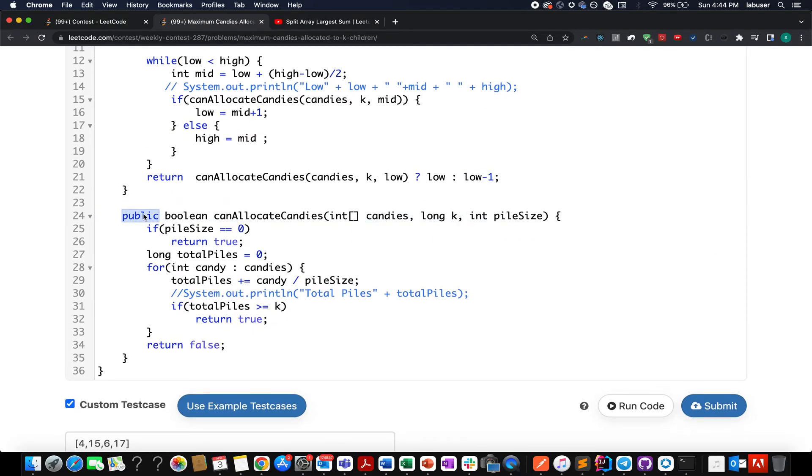Now the problem reduces to writing this helper method appropriately, which returns a boolean variable canAllocateCandies with three parameters: candies, k, and pile size. If my pile size is zero - just one corner case - return false. Otherwise, I created a variable named totalChildrenSupported. I iterate over the candies array, and totalChildrenSupported gets updated to candies divided by piles in a recursive way as we progress. In case my totalChildrenSupported is greater than or equal to k, I simply return true. Otherwise, I return false.